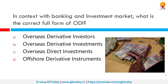In the context of banking and investment markets, what is the correct full form of ODI? The correct full form is Offshore Derivative Instruments, also known as Participatory Notes or P-Notes. These are instruments used by foreign investors to invest in Indian securities markets without getting registered with SEBI. Securities include shares, bonds, and derivatives.